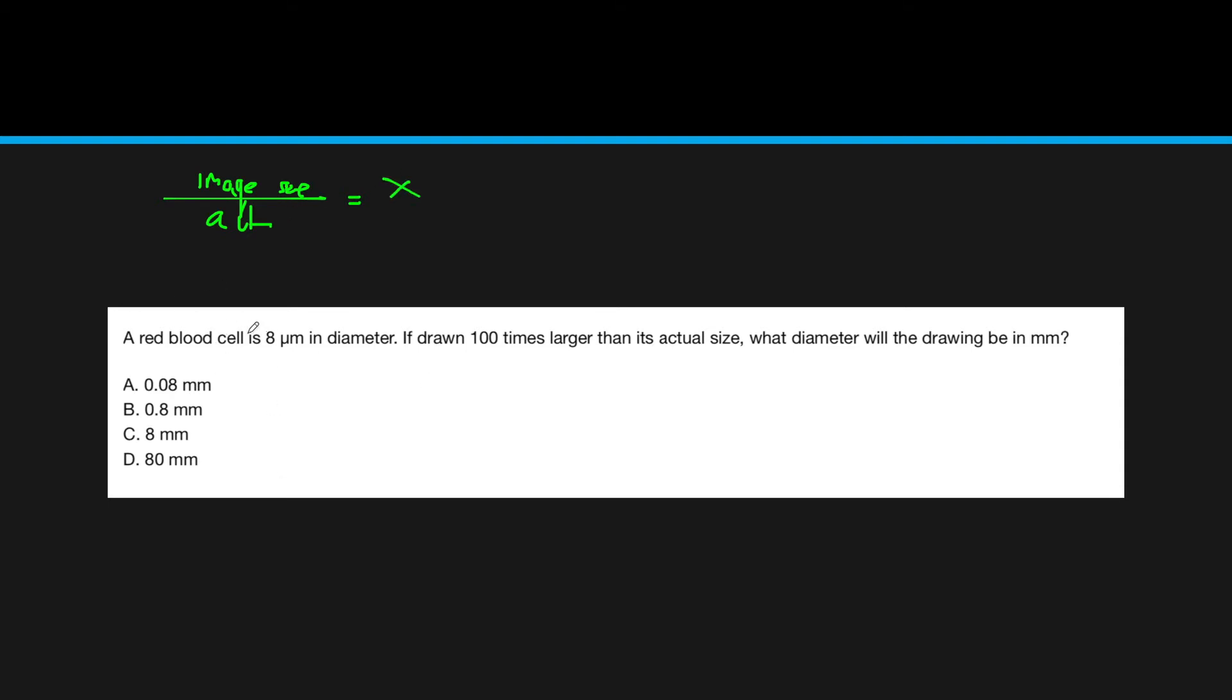A red blood cell is eight micrometers in diameter, and if drawn a hundred times larger, so the magnification is a hundred times, what is the diameter in millimeters? What you would do is multiply to get 800 micrometers, then convert to the same units. Every millimeter is a thousand micrometers, and what you end up with is B, or 0.8 millimeters.